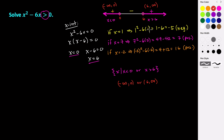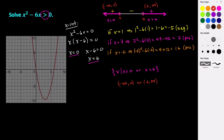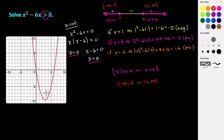Now, how does this compare to looking at this graphically? Let's take a quick look at the graph. We can see that our graph is equal to 0 at x equals 0 and x equals 6 — so we found the x-intercepts correctly. And we can see that for all values to the right of 6 and to the left of 0, our graph is above the x-axis, which confirms our algebraic solution.